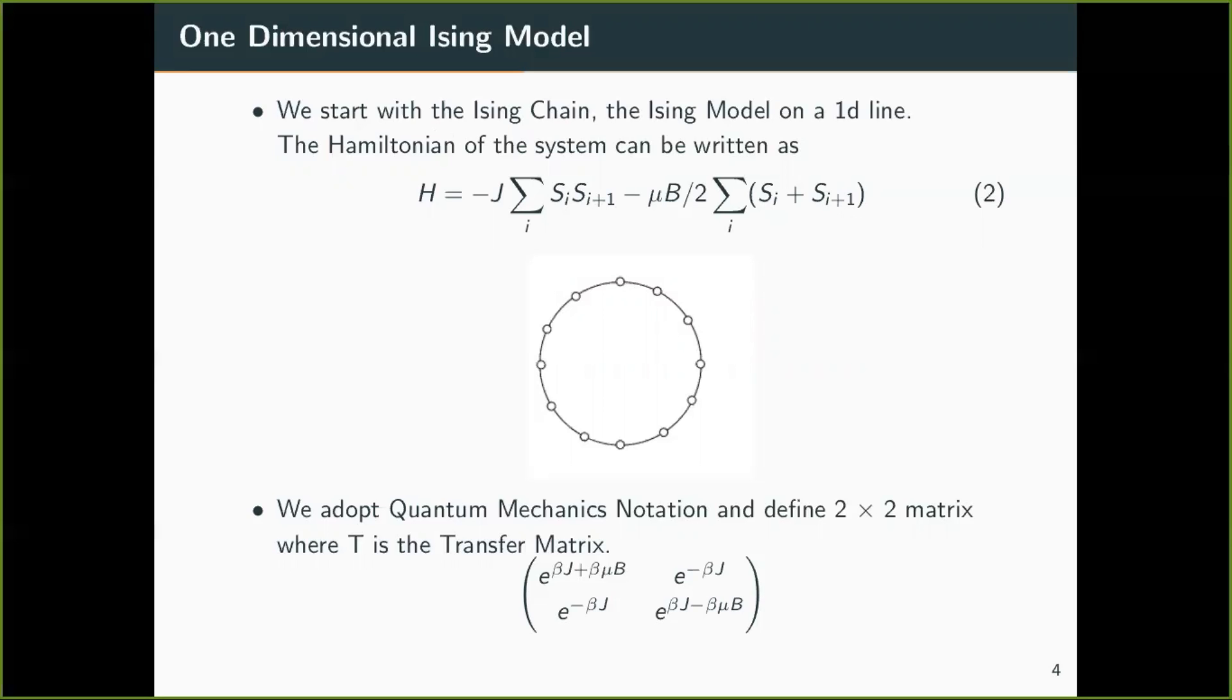Now that we have written down the Hamiltonian, we can write the partition function which I have not explicitly written the equation of that but we know that it is summation over e raised to minus beta H.